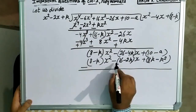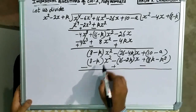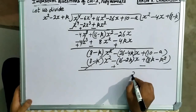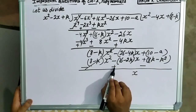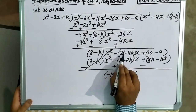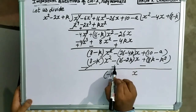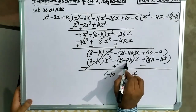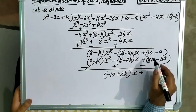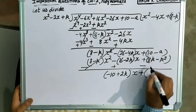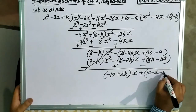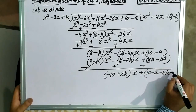अब sign बदले जाएंगे: plus है minus, minus है plus, plus है minus — यह cancel out हो जाएंगे. यहाँ पर x common आएगा: minus 26 plus 16, यानि minus 10 बचेगा. minus minus plus, plus 4k, plus minus minus 2k, तो plus 2k. plus 10 minus a — यहाँ like terms नहीं हैं — 10 minus a, minus 8k, और minus minus plus k square.